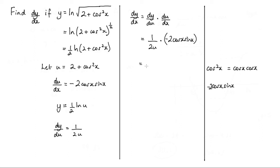So we can cancel a few things here. We can cancel that 2 with that 2. In the numerator we've got negative cos x sin x. In the denominator we've still got the u term, but u is this substitution here which is 2 plus cos squared x. So the answer is negative cos x sin x over (2 plus cos squared x).